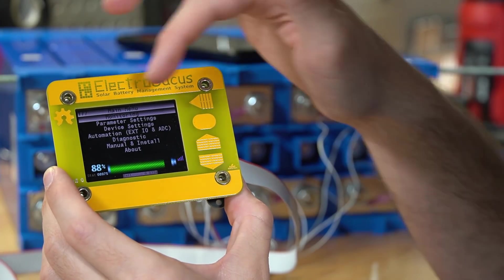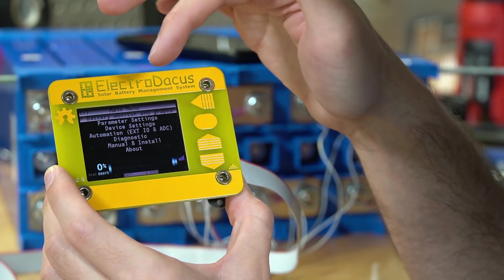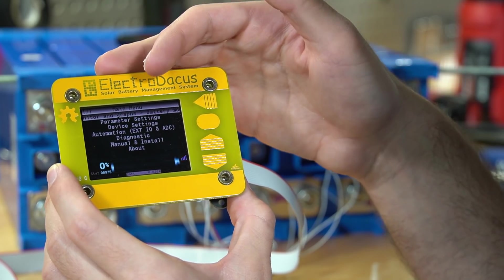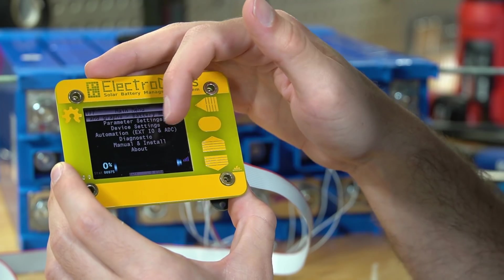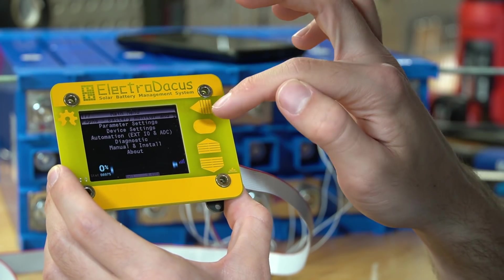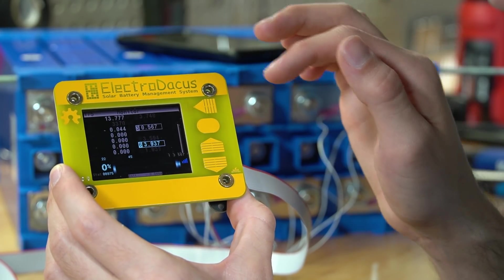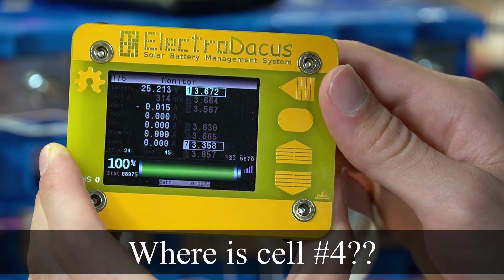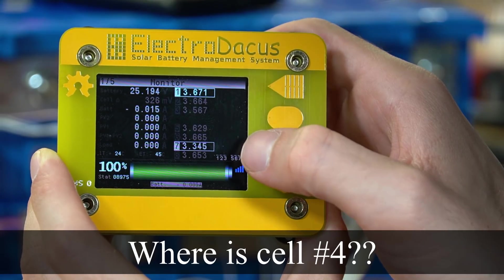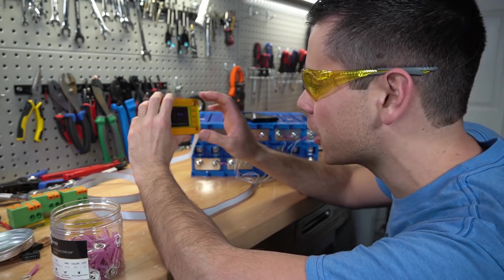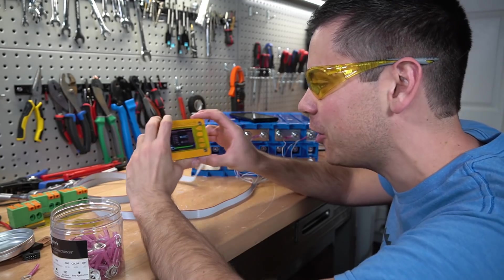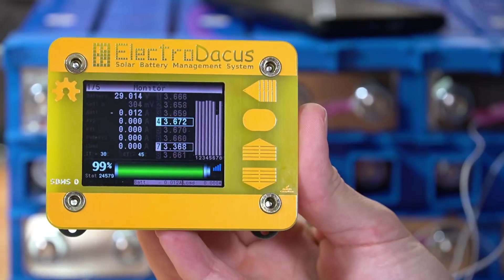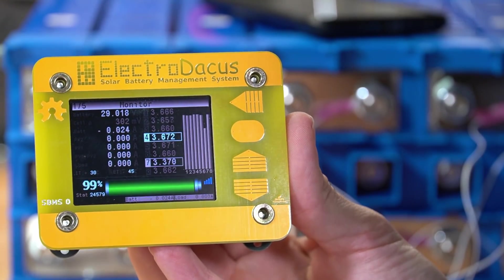And this is the first manual you'll see. Monitoring, parameter settings, device settings, automation for controlling solar charge controllers or inverters, diagnostics, manual and install, and about. So let's go to the monitoring section first. And this is the monitoring section. We have 25 volts for the whole pack. And these are the cell voltages. I just realized that the terminals were not tightened down. So now the cell voltages are like rock solid. So that was my mistake. Now look at these voltages. They are rock solid.